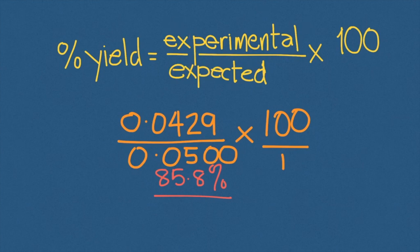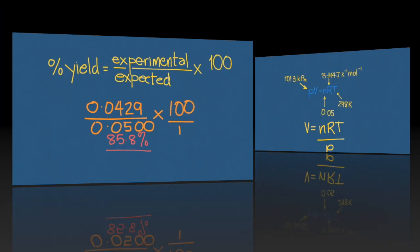Dividing this experimental value by 0.05, which is what's expected given the one-to-one ratio of calcium carbonate to calcium oxide from the balanced equation, we can then use this relationship to solve and get the percentage yield, which is 85.8%.